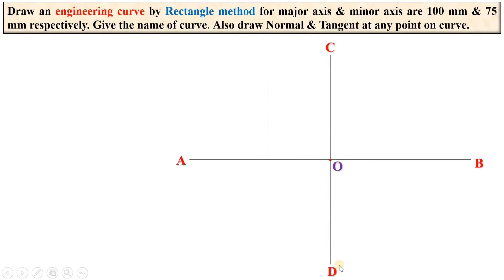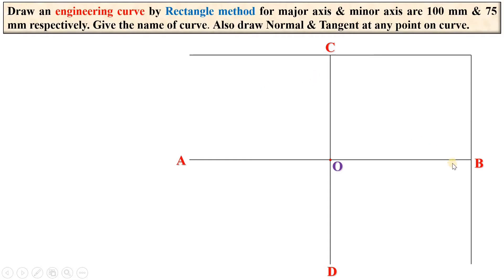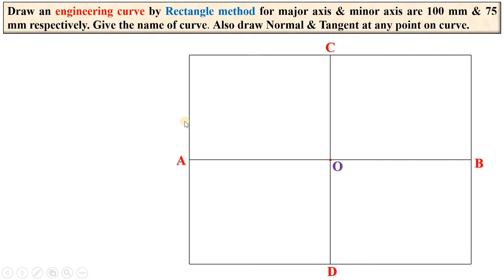Give the name of the vertical endpoints as C and D. Now, since it is the rectangle method, you have to draw the rectangle passing through points A, B, C, and D. Use a roller scale to draw the parallel lines so that you will get a perfect rectangle. Now divide this distance into equal divisions — here I have divided it into four equal divisions, but you can use four, five, or six equal divisions.